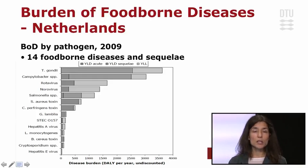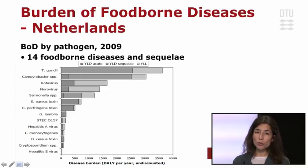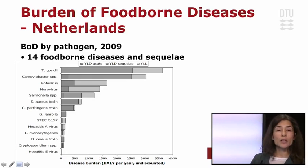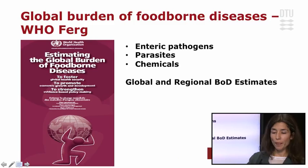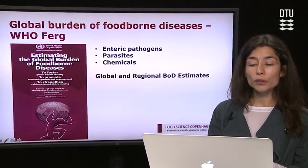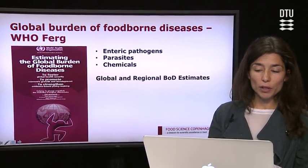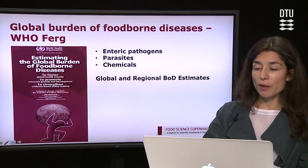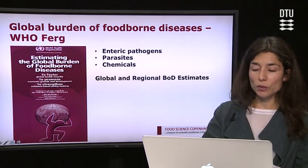There are examples of burden of disease studies at the national level. Probably the most famous and largest is from the Netherlands, where results are published regularly. For 2009, it was estimated that in the Dutch population, Toxoplasma gondii is actually the foodborne pathogen causing the highest burden, followed by Campylobacter and rotavirus. There is also a large initiative to estimate the global burden of foodborne diseases, organized by the World Health Organization, focusing not only on enteric pathogens but also on parasites and chemicals, with the aim of estimating global and regional burden of disease estimates for this set of pathogens.